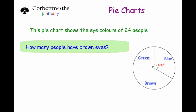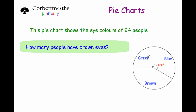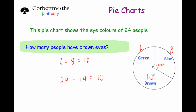The last question says how many people have brown eyes? We had 6 with green and 8 with blue. So to work out how many have brown we just need to add together the 6 and the 8, which equals 14. That means 14 have got green or blue combined, and altogether there are 24. So if we do 24 take away 14 that's equal to 10. So 10 people have got brown eyes. And that's it.